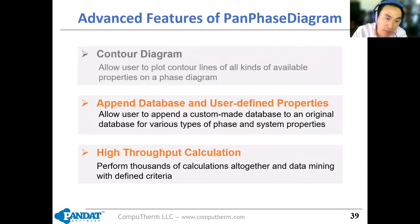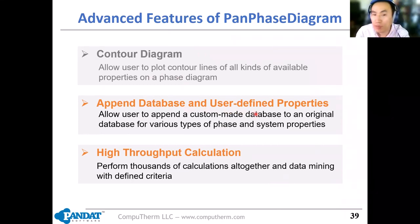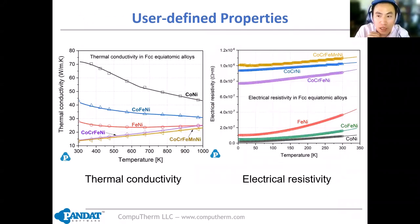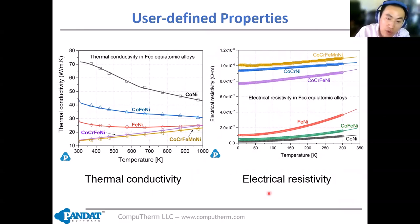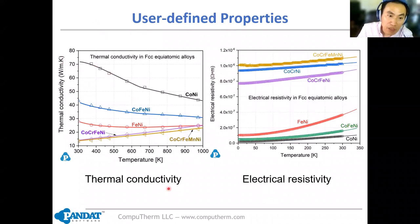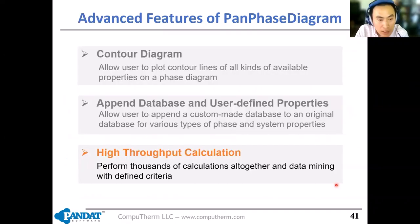Another advanced feature is the append database or user-defined properties, which allows users to append a custom-made database to an original database for various types of phases and system properties. Two examples of user-defined properties are thermal conductivity and electrical resistivity. You can append the user-defined property database to the original thermodynamic database and make property calculations — the lines are the calculated results and the symbols are experimental results.